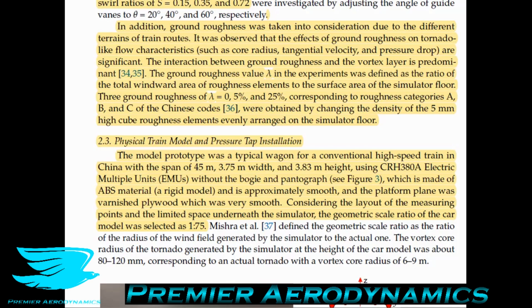The model prototype was a typical wagon for a conventional high-speed train in China with a span of 45 meters, a width of 3.75 meters, and a height of 3.83 meters. It uses an electric multiple units system on top without the bogey and pantograph. For more on train aerodynamics setups and how these different things affect aerodynamics and air acoustics, check out podcasts 22 and 23. The train is made of an ABS material, a rigid material, and is approximately smooth.